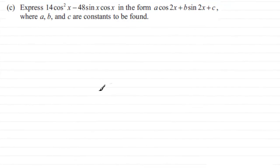Hi. Now in this part of the question we've got to express 14cos²x - 48sinxcosx in the form acos2x + bsin2x + c, where a, b and c are constants to be found.